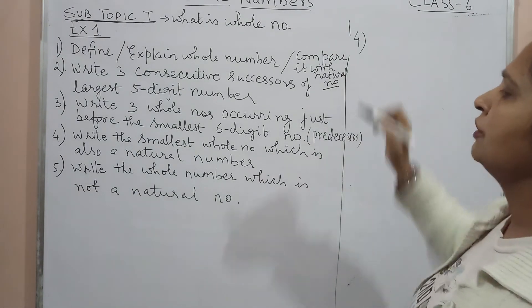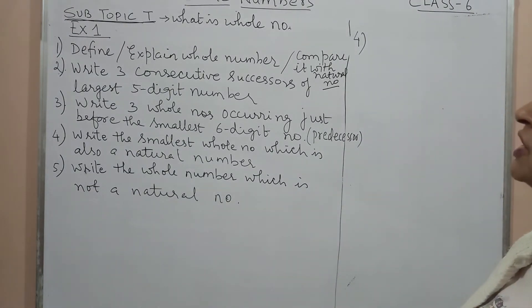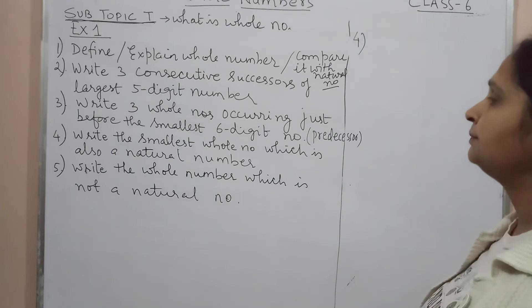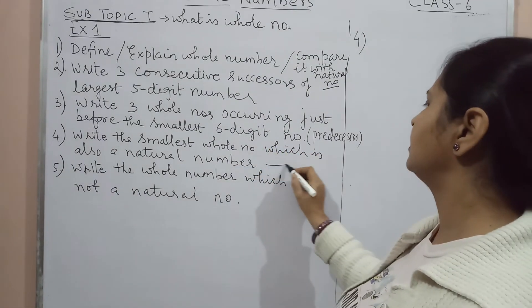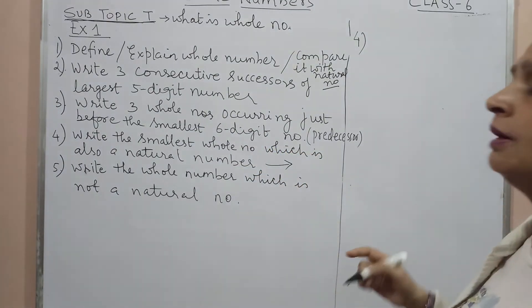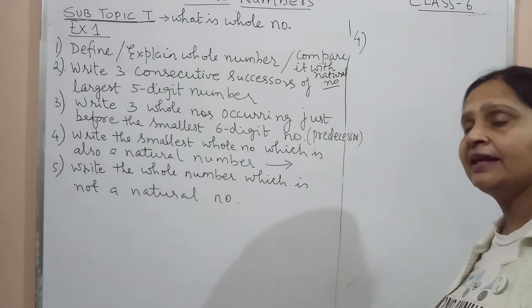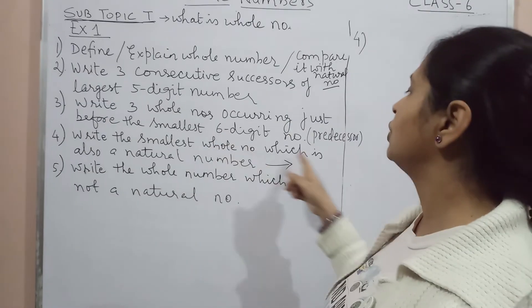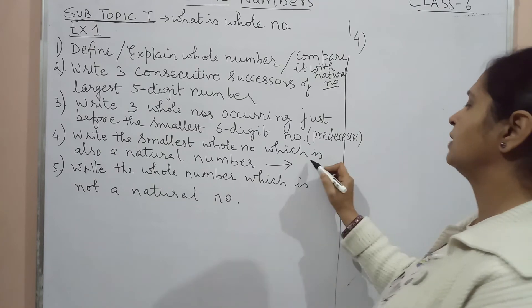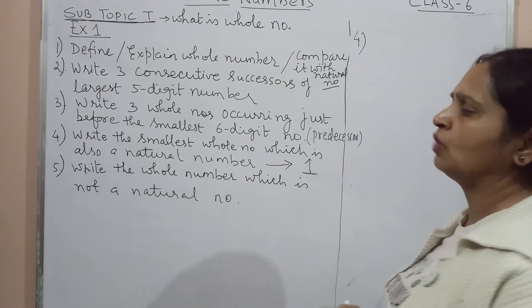Now question number 4: write the smallest whole number which is also a natural number. We all know whole number starts with 0 and the smallest whole number is 0. Par kya wo natural number hai? Nahi hai. Toh aapne kya poocha: write the smallest whole number which is also a natural number. Obviously, our answer is 1.